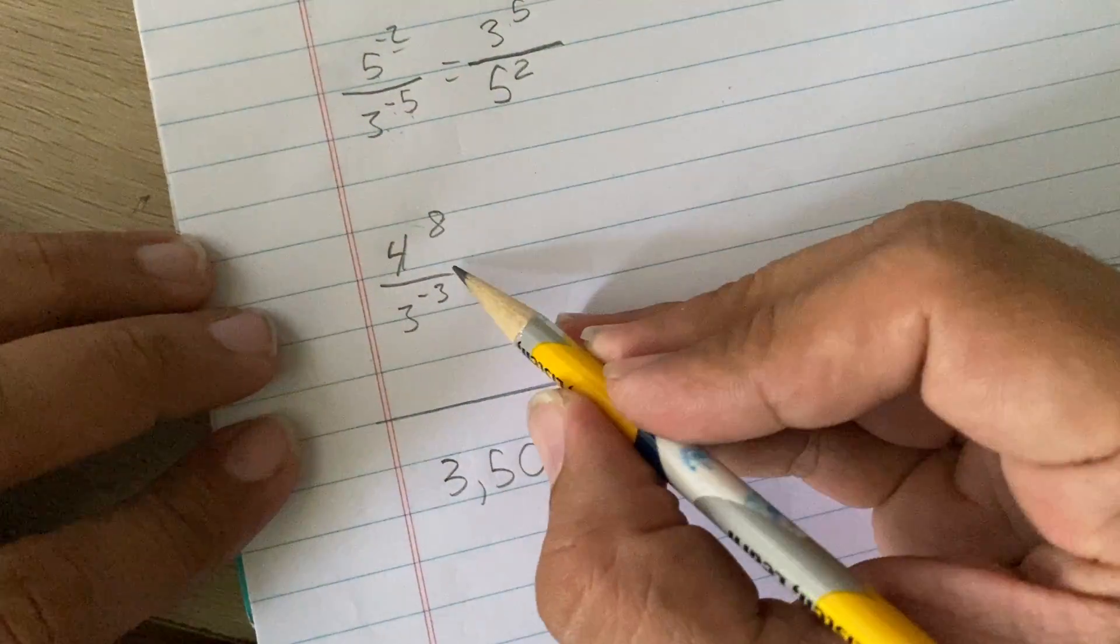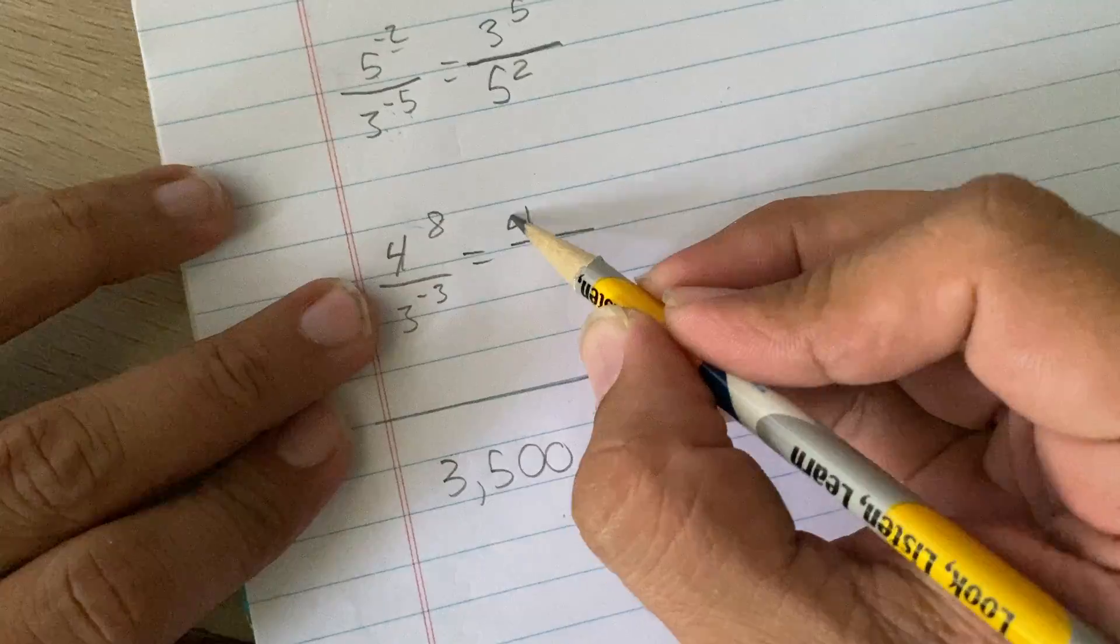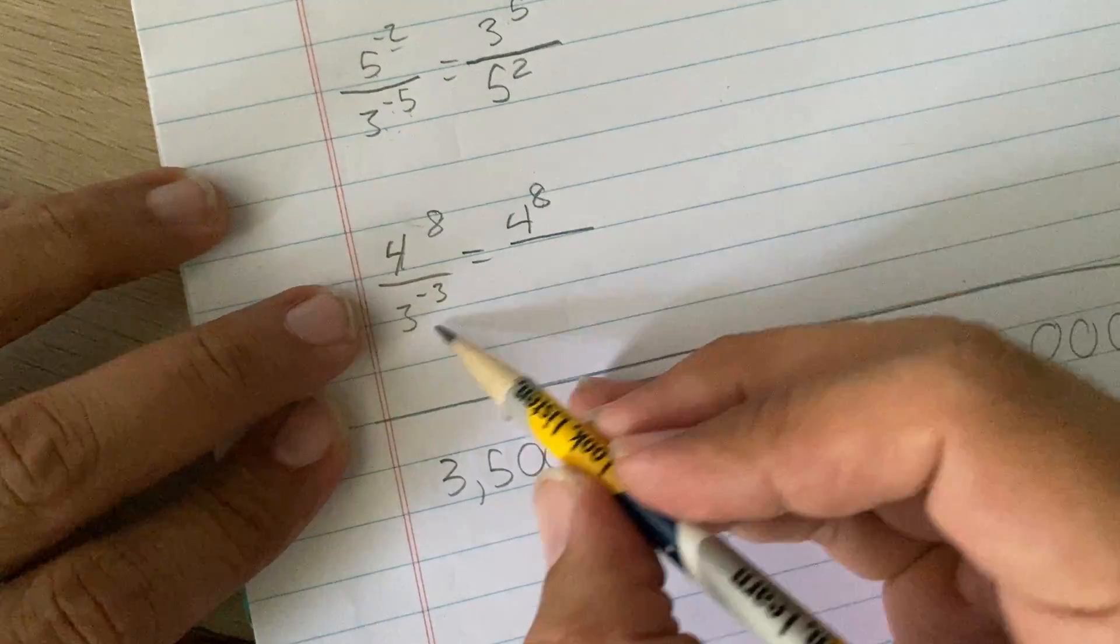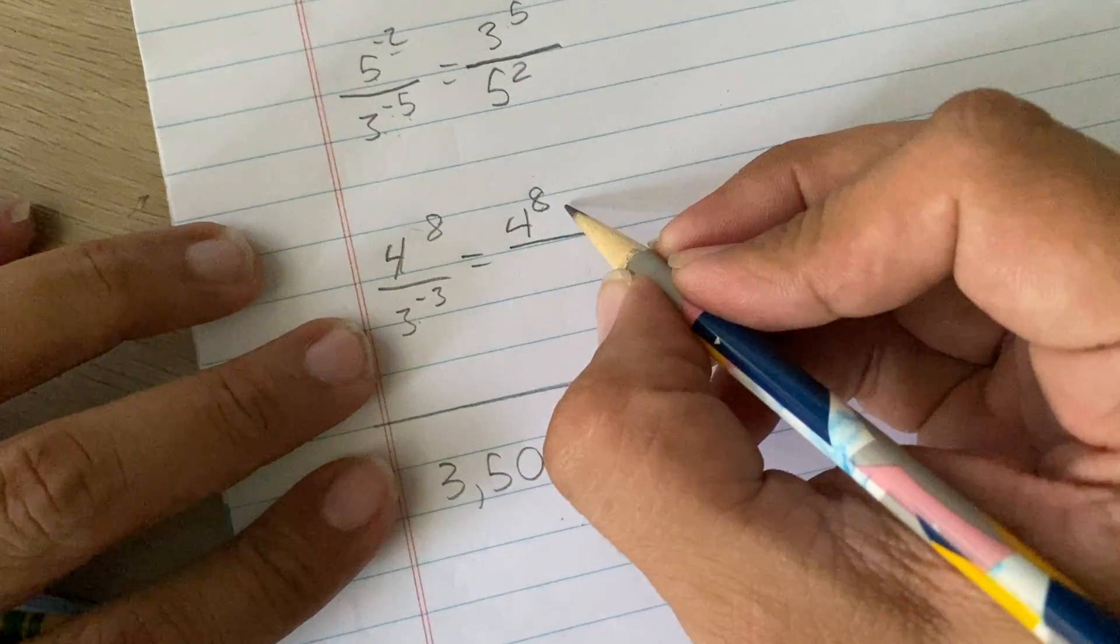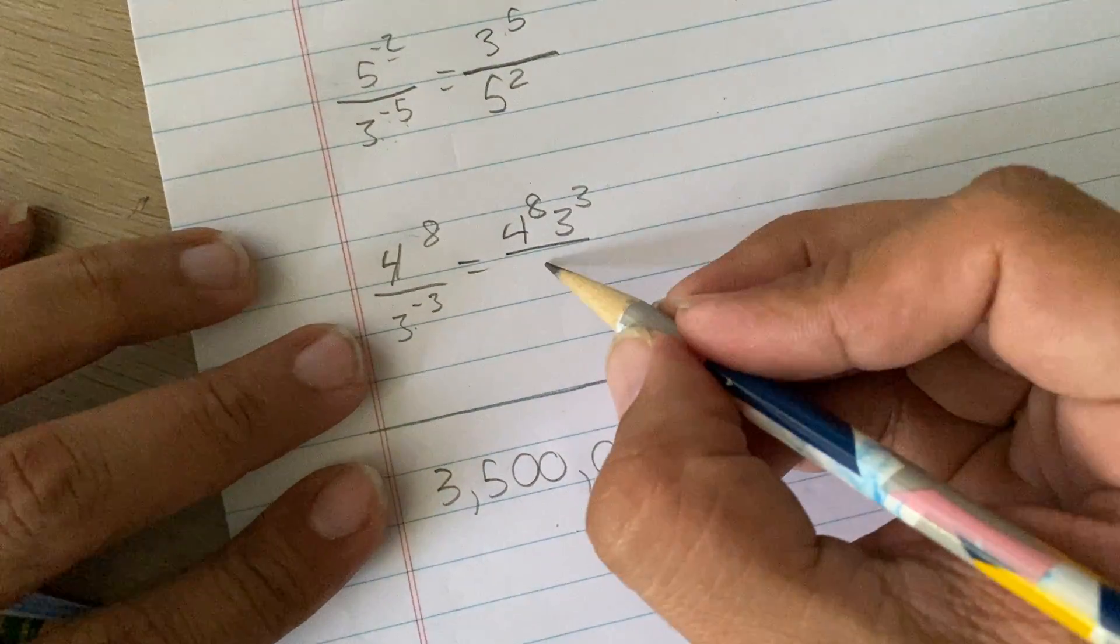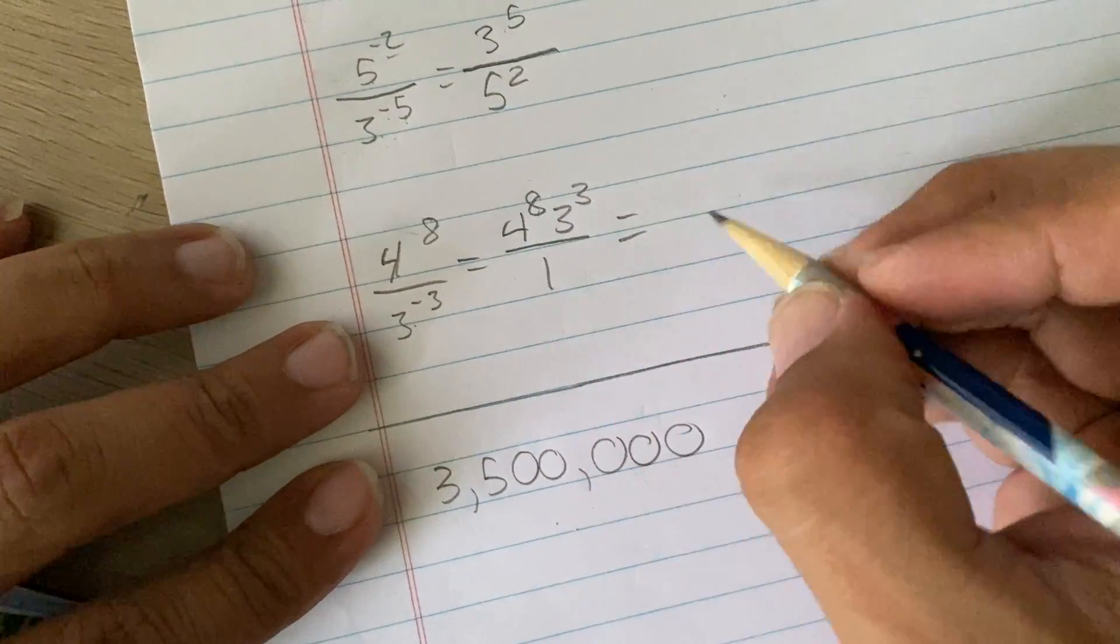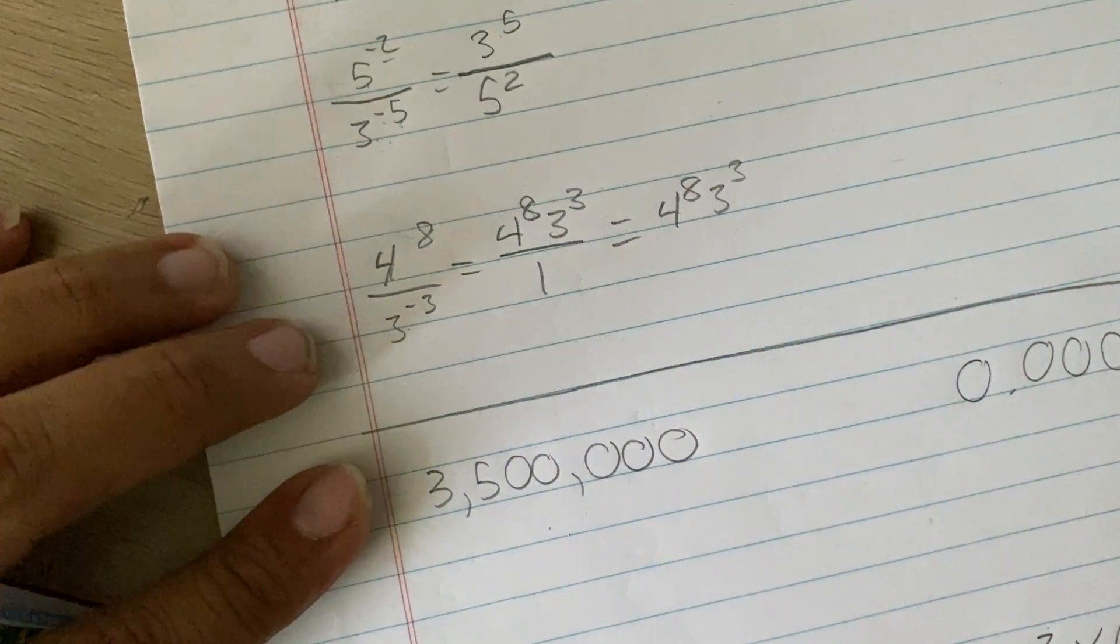Last example here. Now, the 4 to the 8th belongs up there. It's positive, and it belongs up there. This one does not belong down here, so it actually belongs up here with that one. There's nothing on the bottom, so I'm going to put a 1, but anything divided by 1 is actually going to be that anyway.